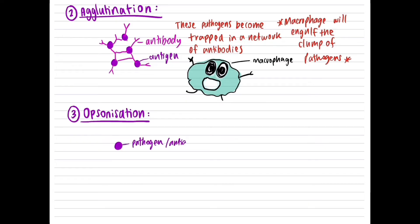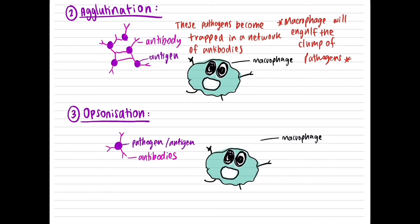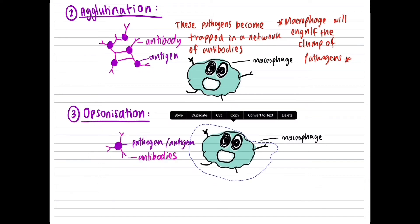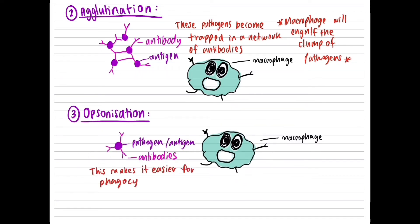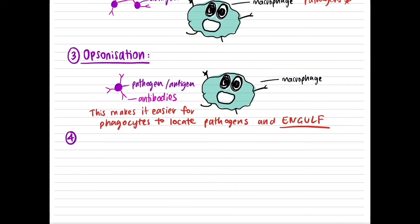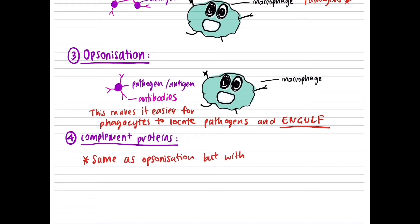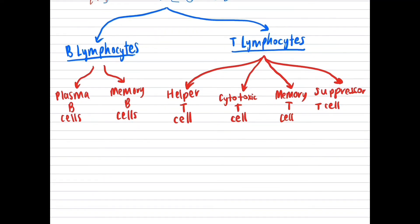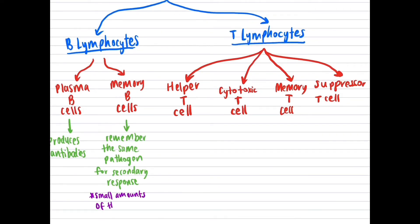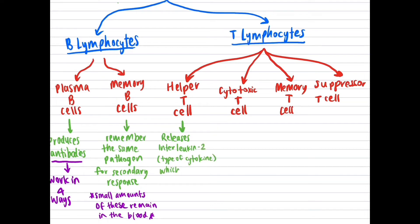Three — opsonization: antibodies tag pathogens for destruction, making it easier for phagocytes to locate them. Four — complement activation: this is similar to opsonization but the pathogen is destroyed by complement proteins rather than phagocytes. To summarize the roles of B and T cells in the third line of defense: plasma B cells produce antibodies; memory B cells remember the same pathogen for a faster secondary response; and helper T cells release interleukin-2 which promotes naive B cells and T cells to differentiate into the relevant cell types.